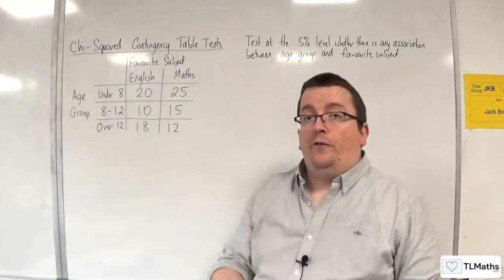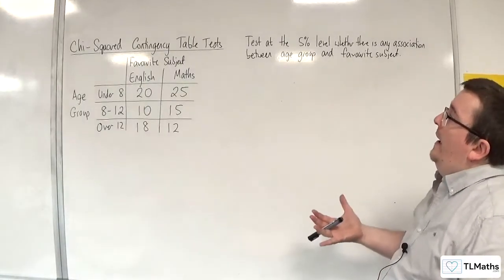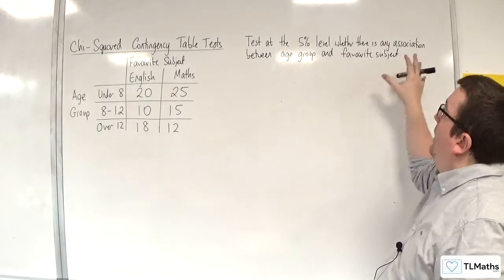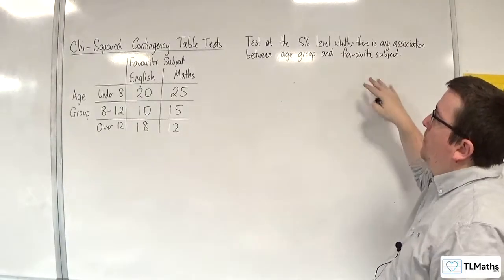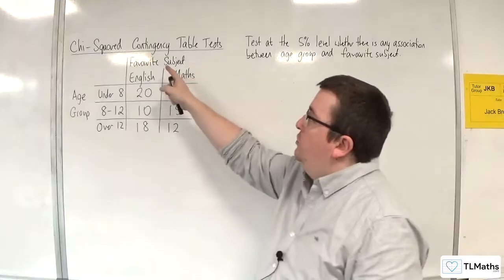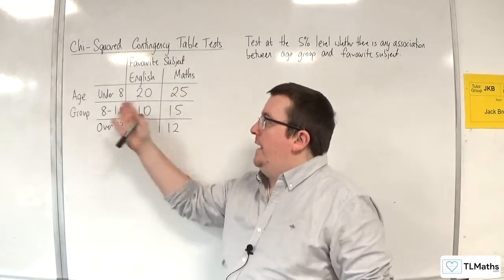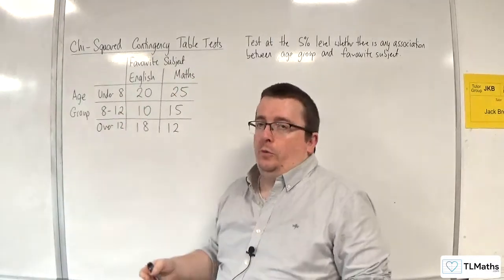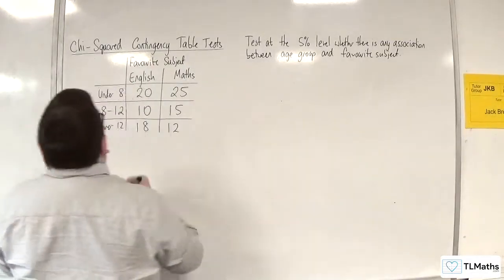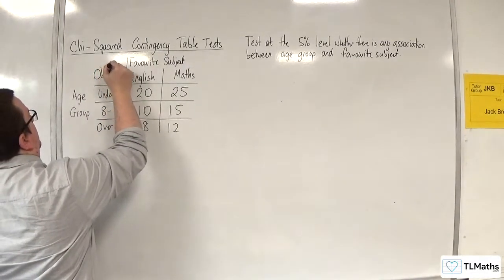In this video, we're going to go through a full example where we have to test at the 5% level whether there is any association between age group and favourite subject. We've got favourite subject — English or maths — and age group: under 8, 8 to 12, and over 12. These are the observed values, so let's label that as observed.